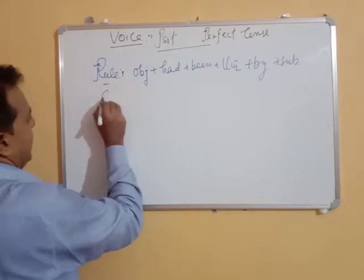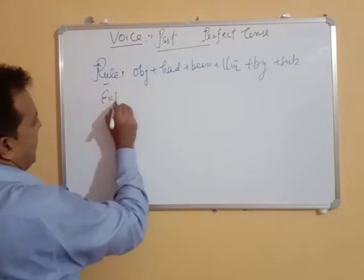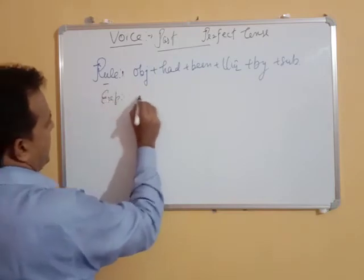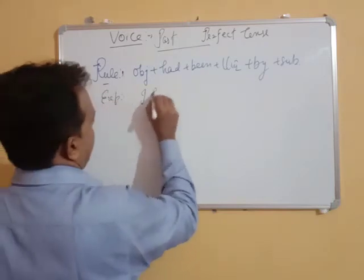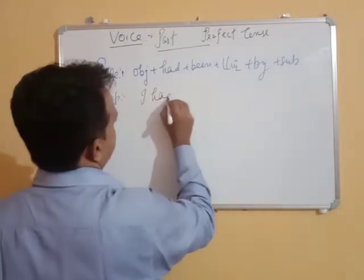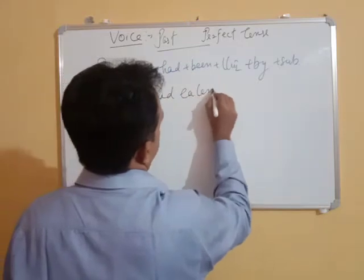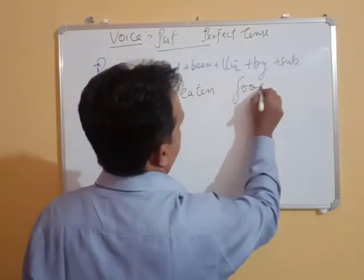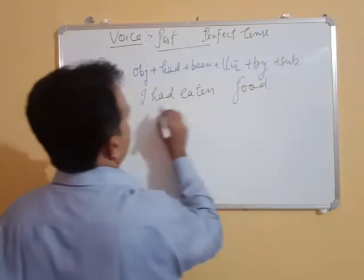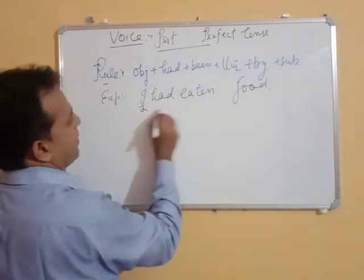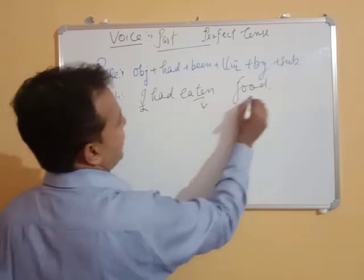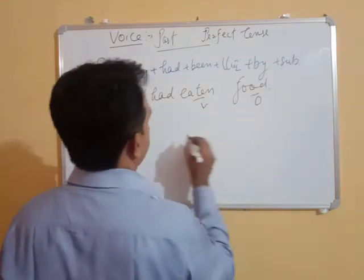For example: 'I had eaten food' — in which 'I' is the subject, 'eaten' is the verb (V3), and 'food' is the object.